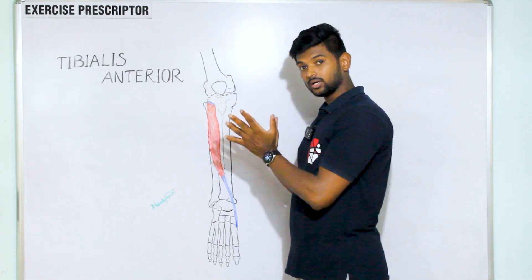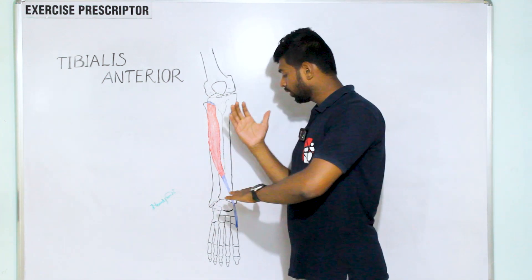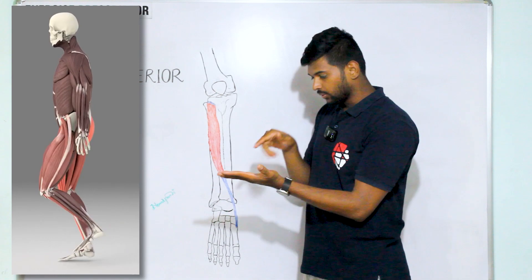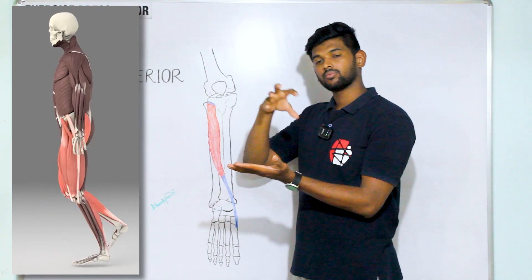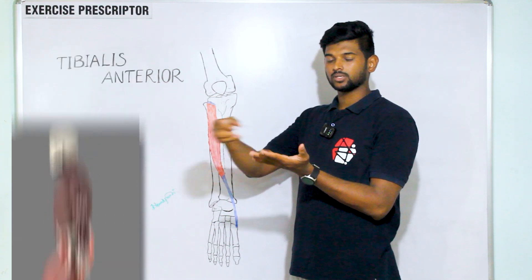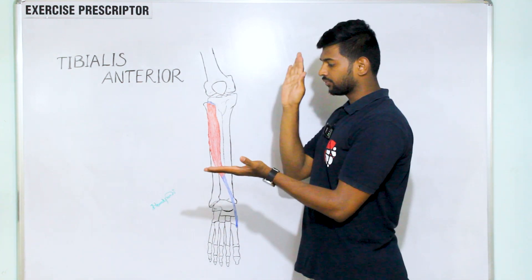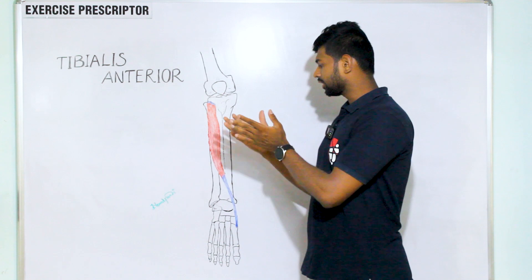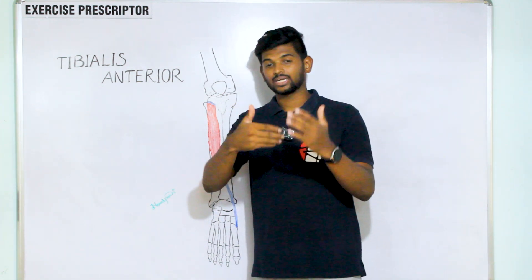So tibialis anterior reverse mover action helps to dorsiflex the leg at the ankle joint when our feet is planted, during the gait cycle or in ankle dorsiflexion mobility. These are the situations where our leg is moved to produce the dorsiflexion. That time tibialis anterior muscle works in reverse mover.